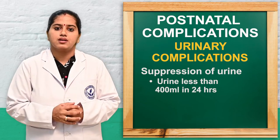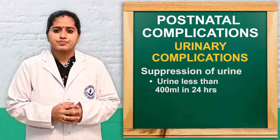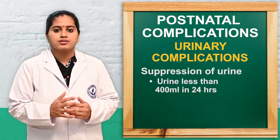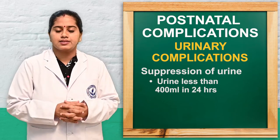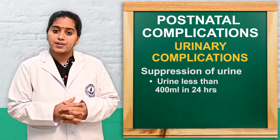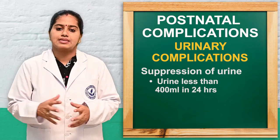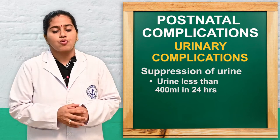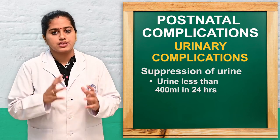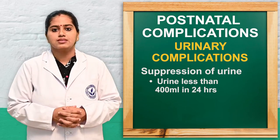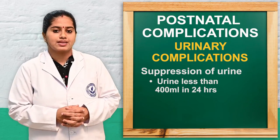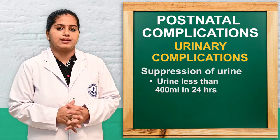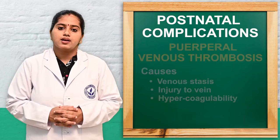The next problem is suppression of urine, where the amount of urine is less than 400 ml within 24 hours. This may indicate kidney failure and must be evaluated accordingly.